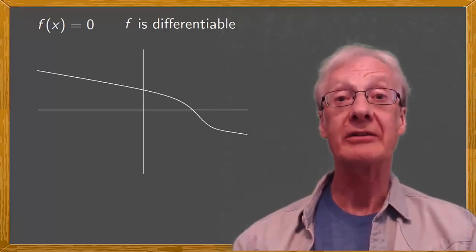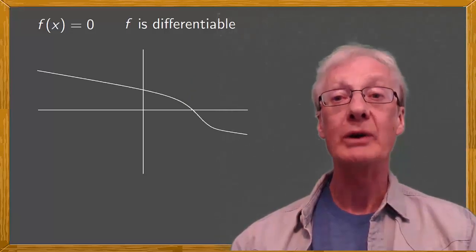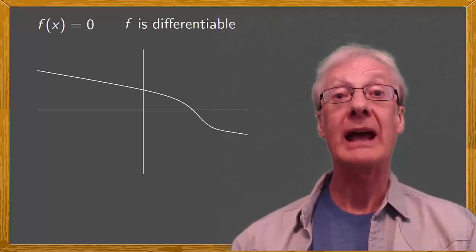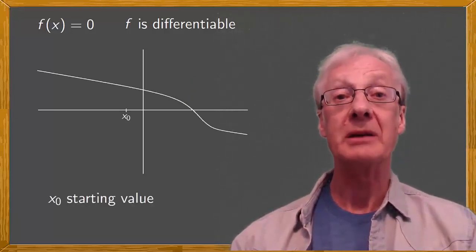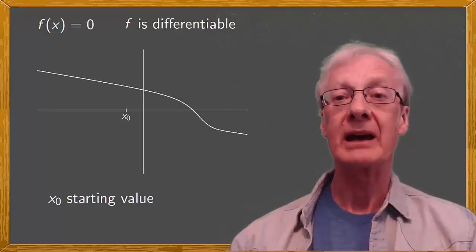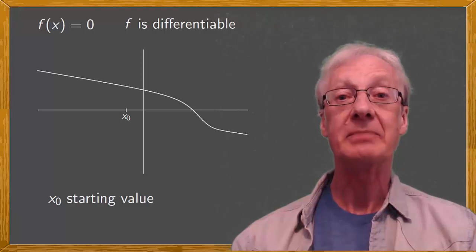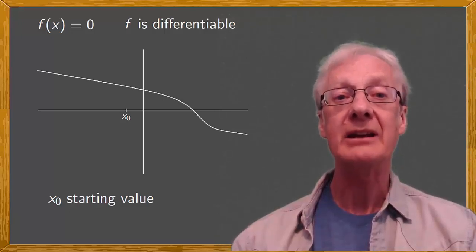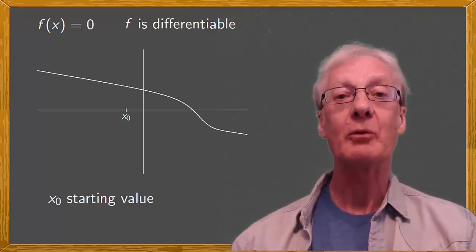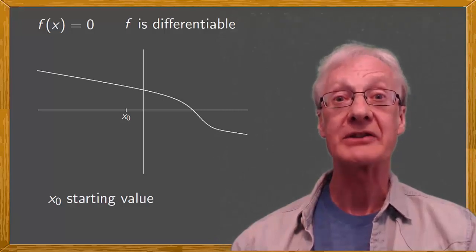First, we have to have a starting value for x, a real number that we'll call x0. This value may be given to us, or we may have some idea what value to choose, or we may just have to pick one at random. In any event, let's assume that we have some initial value, x0.